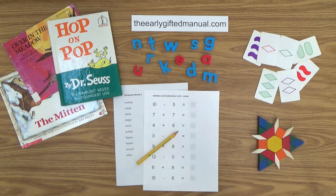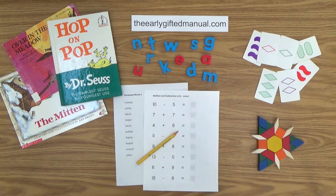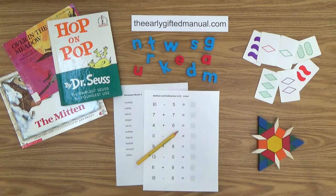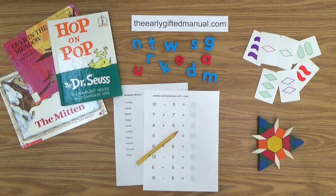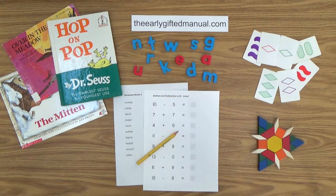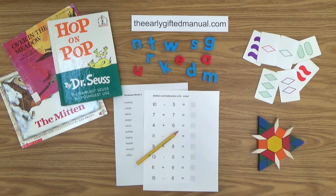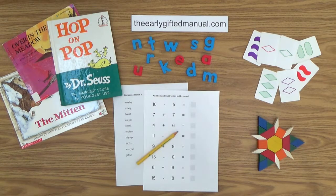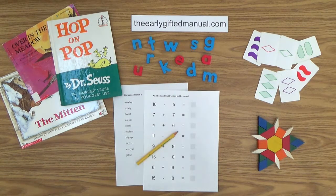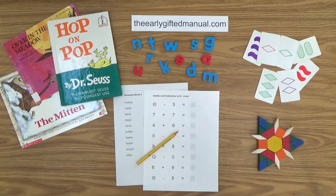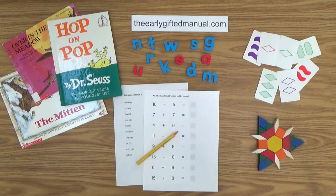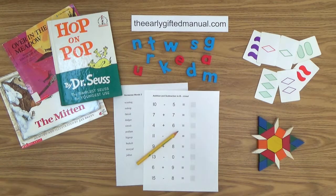As the video lessons are designed to work in conjunction with the program on my website, I ask you to, at some point, click on the URL link in the description box below and this action will take you to theearlygiftedmanual.com. By doing that, you will be able to put this lesson and all of the video lessons here on my channel in the proper context of the total program that I am presenting to you and your child.